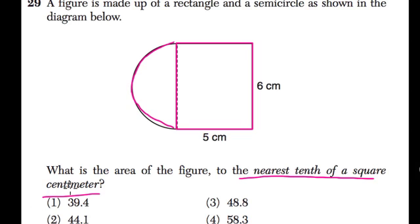And we want to know what is the area of the figure to the nearest tenth of a square centimeter. So of course, we're going to encounter pi because we're dealing with a semicircle. Remember that the area of a circle is pi r squared. So this semicircle will be half of that. We have pi r squared divided by 2.